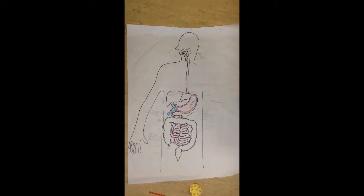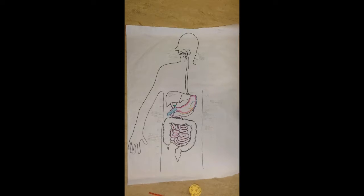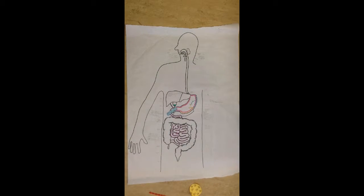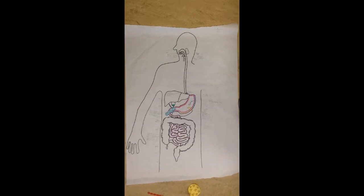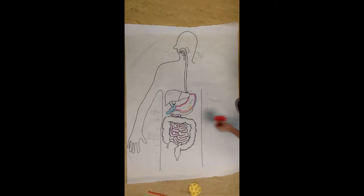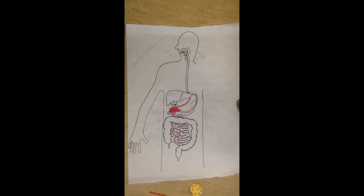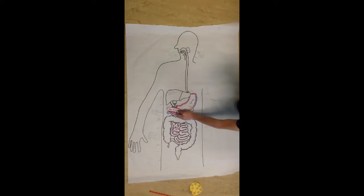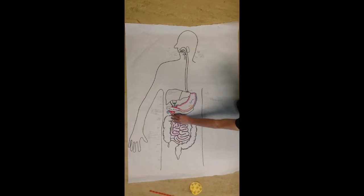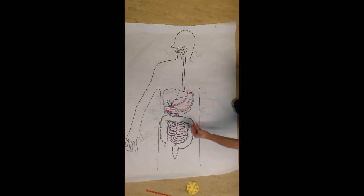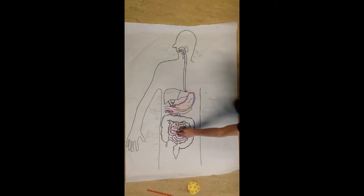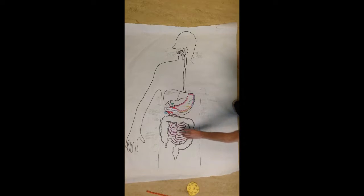And what happens with duodenum is the hormone secretin is released, which contains sodium bicarbonate. And what that does is it turns the pH of all these carbs here to 8.5, so they can be working at their optimum level, so they don't go down through the small intestine and they don't create holes and burn all in here.